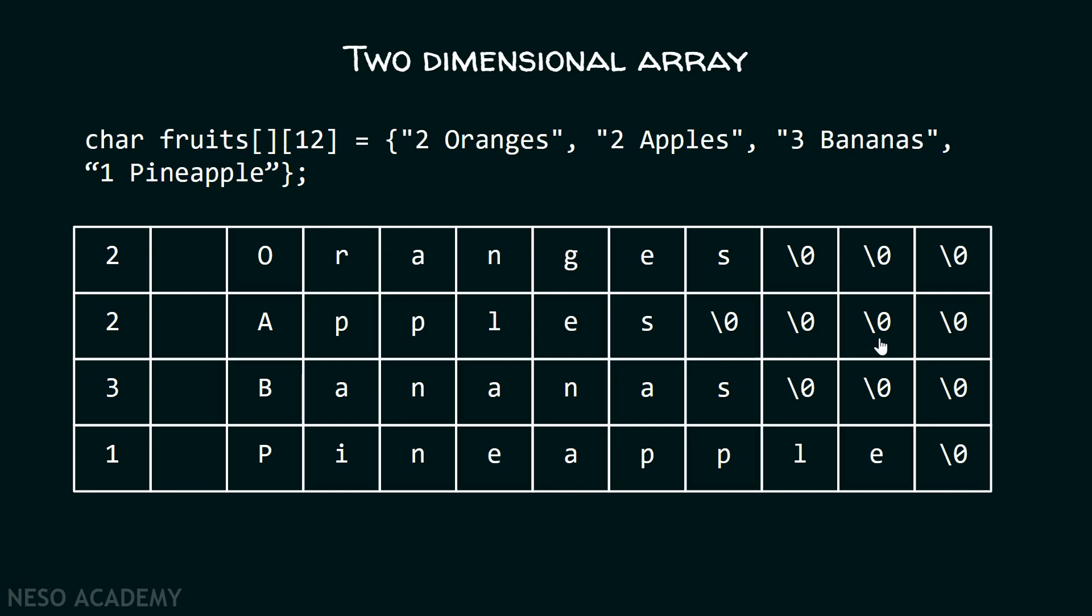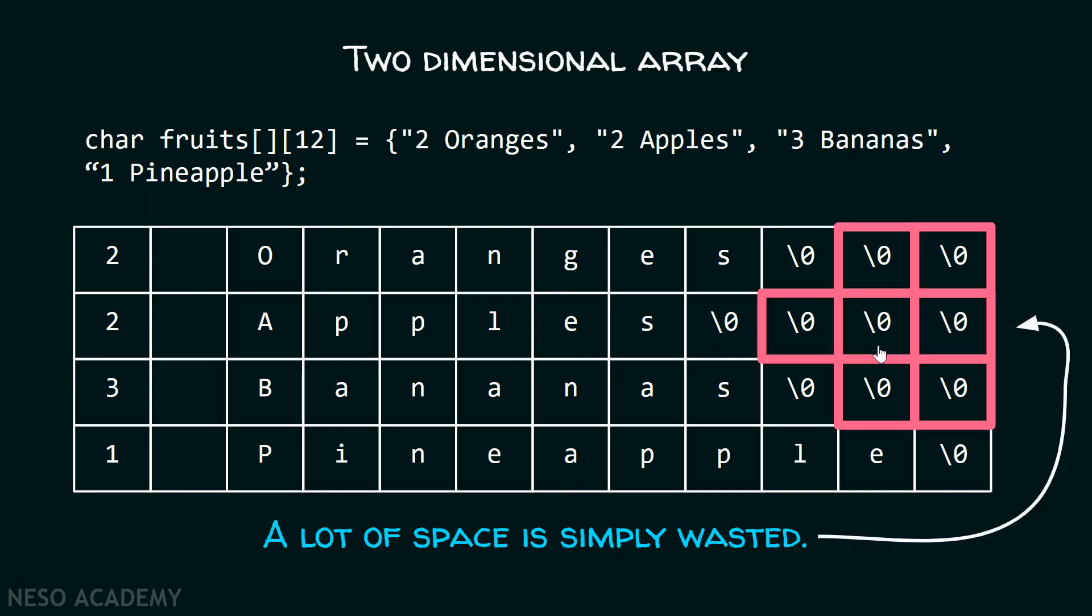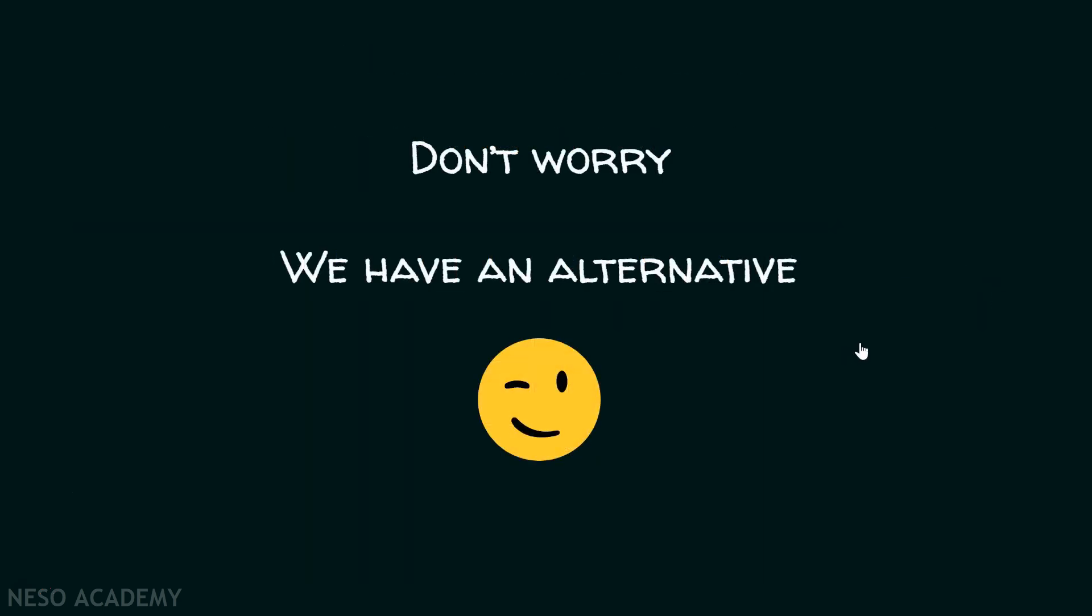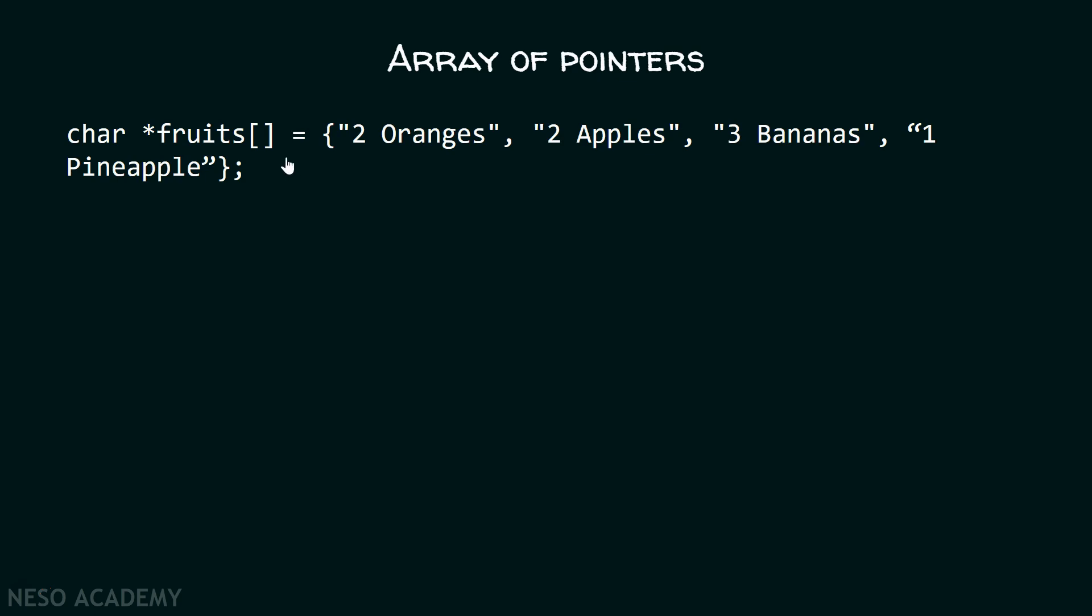But there is a drawback of this two-dimensional array. Here we can see the lot of memory is simply getting wasted. We don't want these null characters at this position. But because of pre-specifying the size here, lot of memory is simply getting wasted. We want these null characters at the end of the string. Only one null character. Not these many null characters at all. To avoid such wastage, we do have an alternative. We don't have to worry.